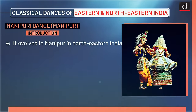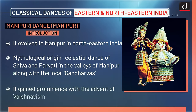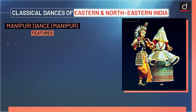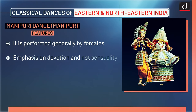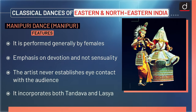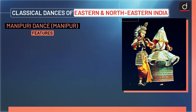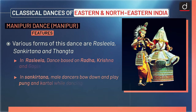Now moving on to Manipuri dance of Manipur. It evolved in Manipur in north-eastern India. The mythological origin of Manipuri dance is the celestial dance of Shiva and Parvati in the valleys of Manipur along with the local Gandharvas. It gained prominence with the advent of Vaishnavism. It is performed generally by females, with emphasis on devotion and not sensuality. The artist never establishes eye contact with the audience. It incorporates both Tandav and Lassya. Nagabandha mudra is an important posture, where the body is connected through curves in the shape of eight. Various forms are Rasleela, Sankirtana and Thangata.